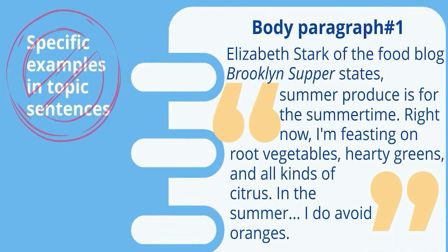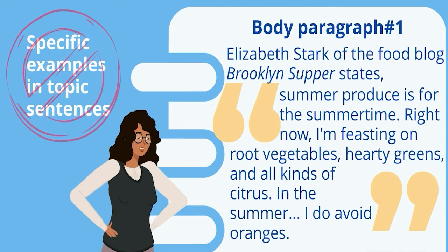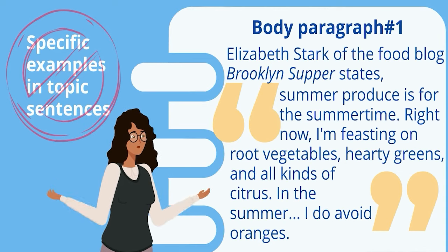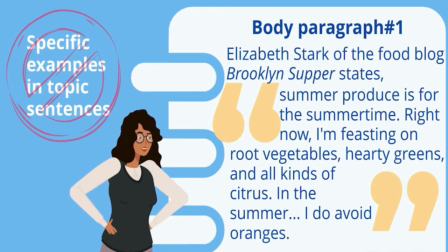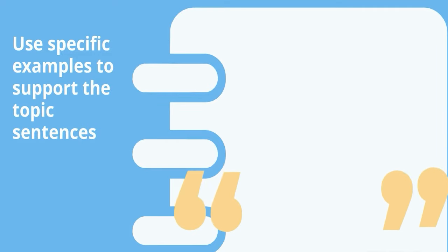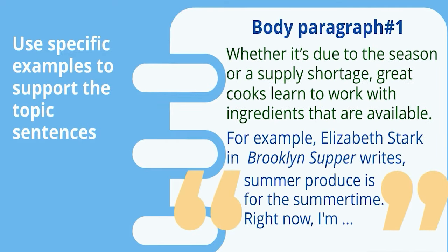While this is a great example that shows a great cook's adaptability, the reader is left confused about how it relates to the thesis. The topic sentence should clearly state how great cooks adapt by using ingredients that are available. For example, whether it's due to the season or supply shortage, great cooks learn to work with ingredients that are available. Then after this topic sentence, the student can add a transition like 'for example' and insert the example of Elizabeth Stark.